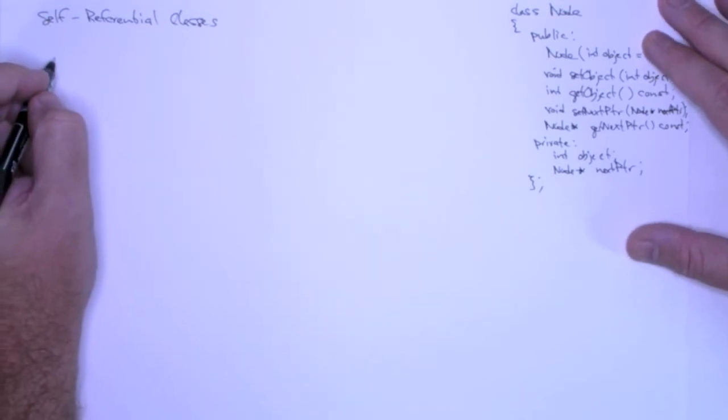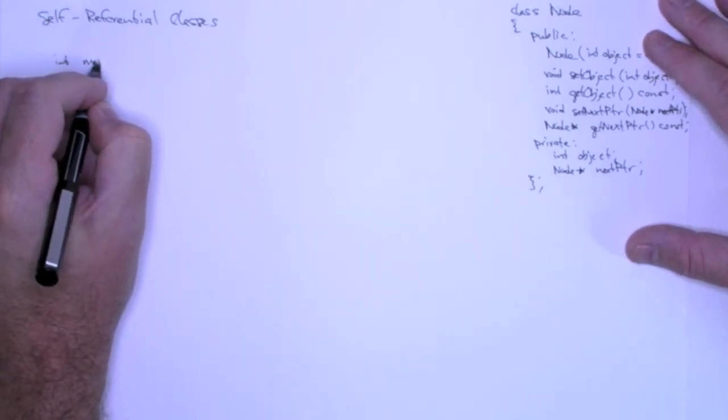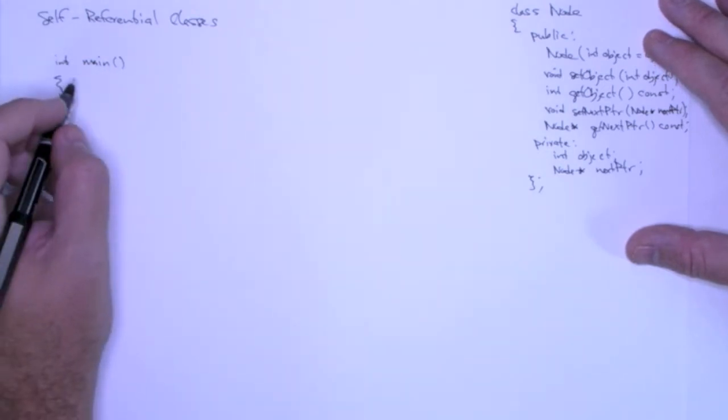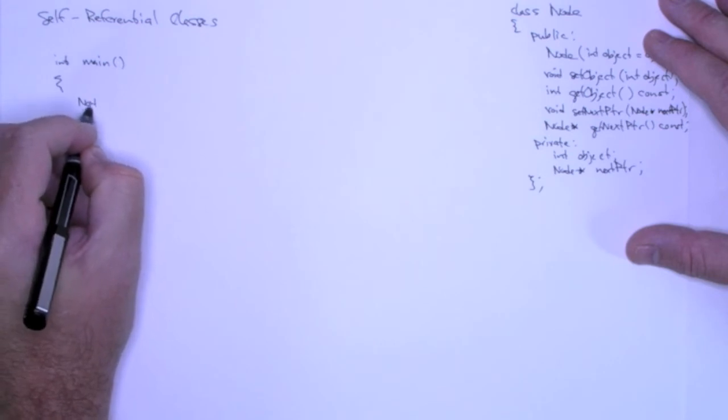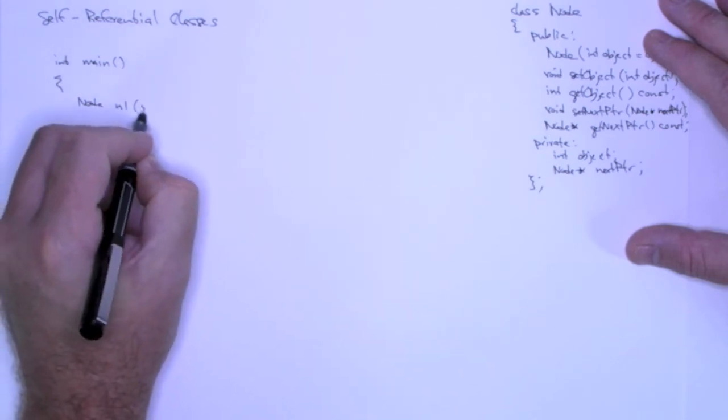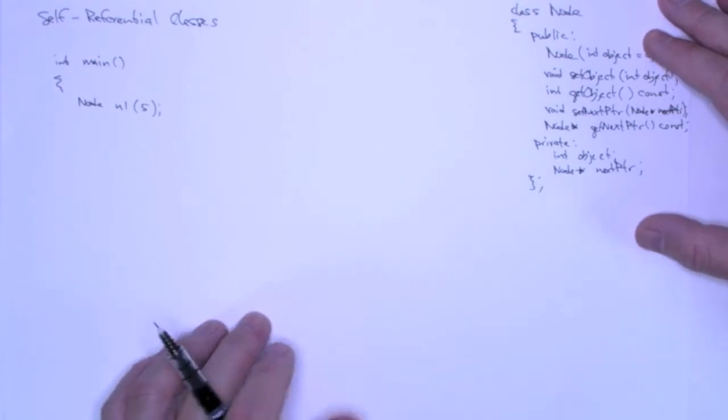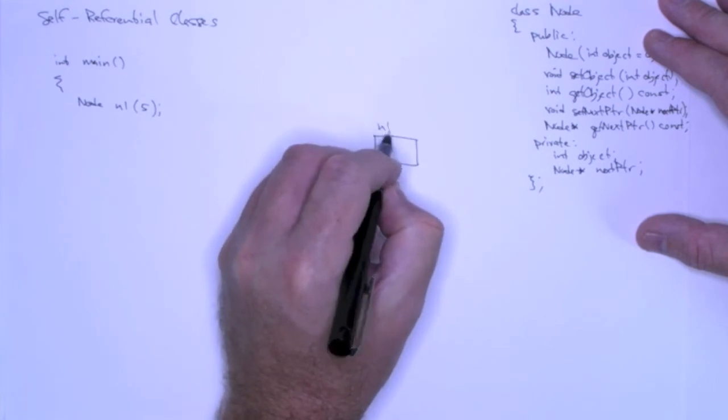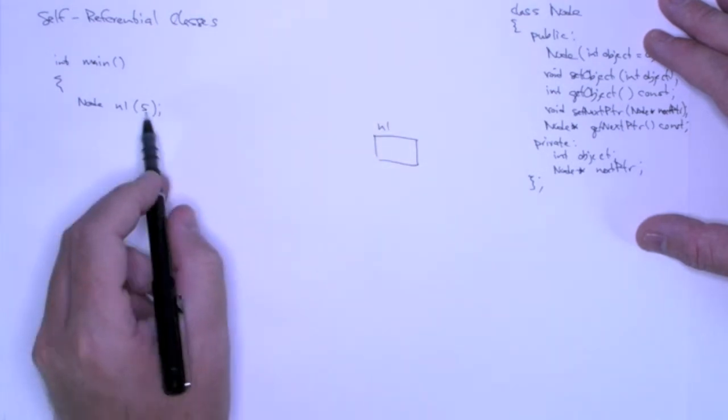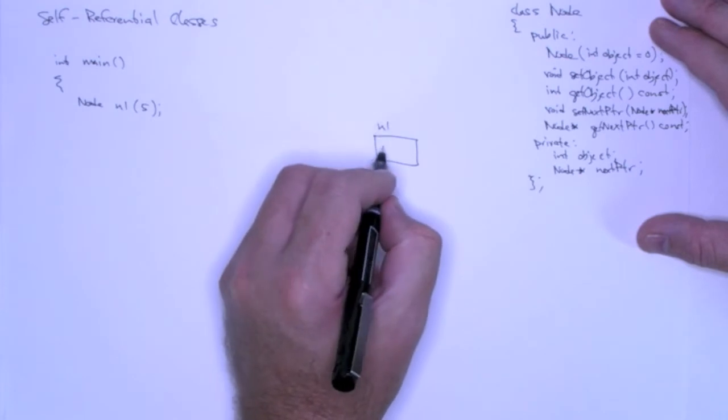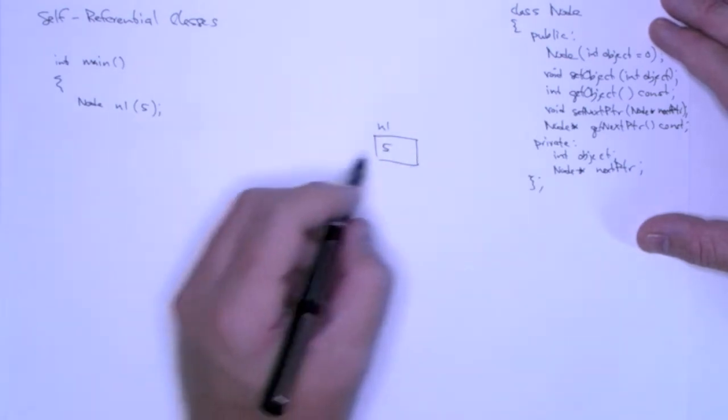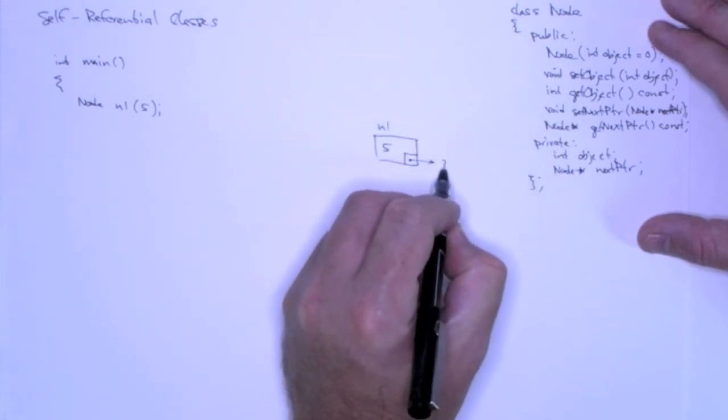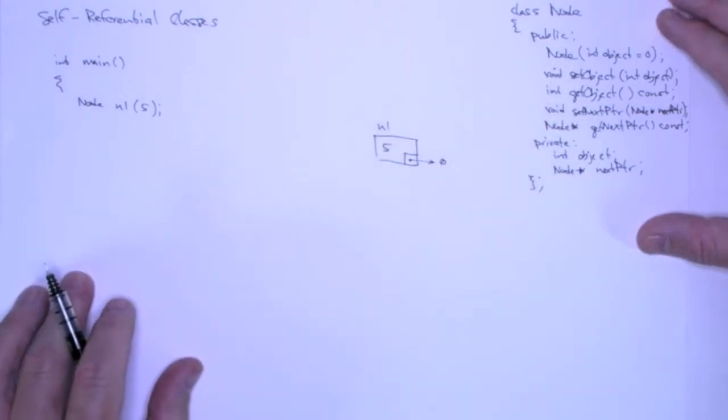Let's say that I have a main function and the first thing I'm going to do is create a node object called n1 and I'll pass 5 into its constructor. So somewhere out in memory, we're going to get the n1 object. We pass in 5 as the object which gets set to its private data member. The constructor also sets the next pointer to null. So that's what n1 looks like.